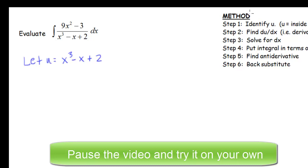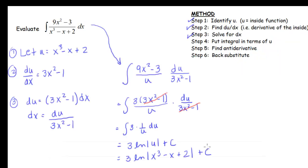What I want you to do is pause the video and see if you can finish this problem up. Welcome back. So here we've already chose u was our denominator. Taking the derivative of the denominator we have 3x² - 1. Solve for dx. First we multiply both sides by dx and divide by the 3x² - 1.